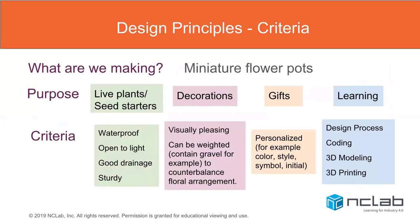Let's look at our project — we're making miniature flower pots. We may actually be using them as flower pots; this is highly functional. We might put in microgreens or start some seeds. If we're going to use them that way, our criteria include: they need to be waterproof, open to light, have good drainage, and be sturdy enough to hold up over time.